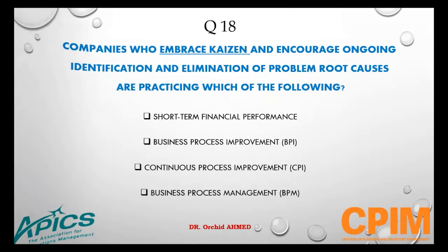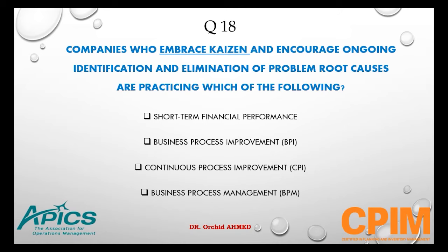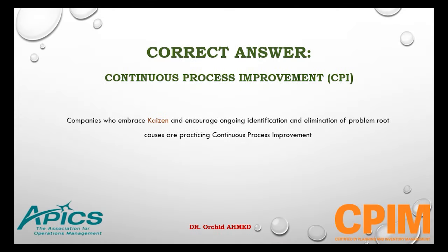Question number 18. Companies who embrace Kaizen and encourage ongoing identification and elimination of problem root causes are practicing which of the following? Options: short-term financial performance, business process improvement, continuous process improvement, or business process management. The right answer is continuous process improvement (CPI). Companies who embrace Kaizen and encourage ongoing identification and elimination of problem root causes are practicing continuous process improvement.